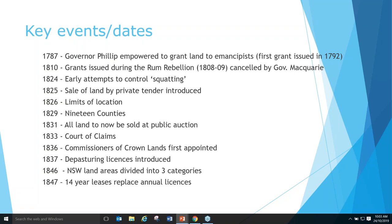By 1831 they pretty much stopped granting land altogether. In the 1830s they started to realise how difficult it was to track who had a legal title to a grant of land, so they instituted the Court of Claims to try and sort that out. By 1836 they'd appointed commissioners of Crown lands to supervise the area beyond the limit of location — an admission that people were going to be living outside those limits and they needed to supervise and control that land occupation. Pasturing licences came in as part of that.